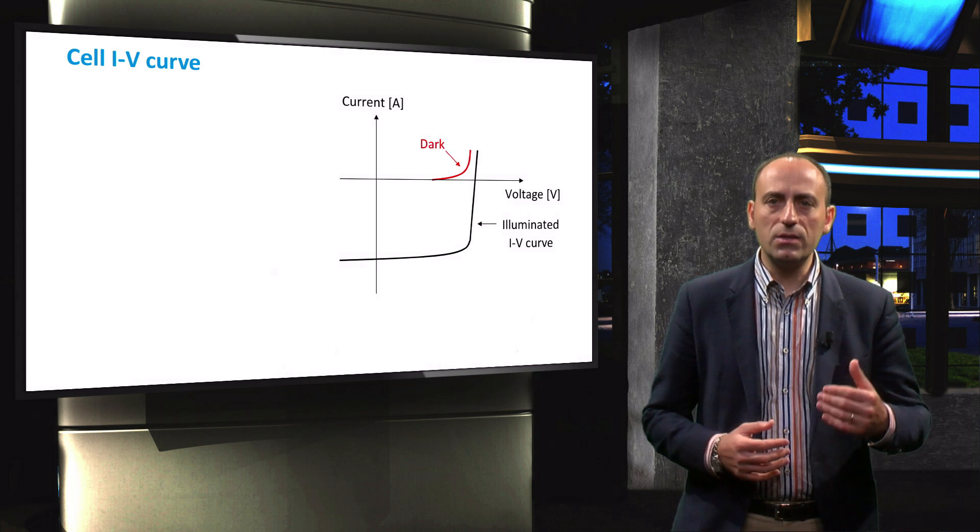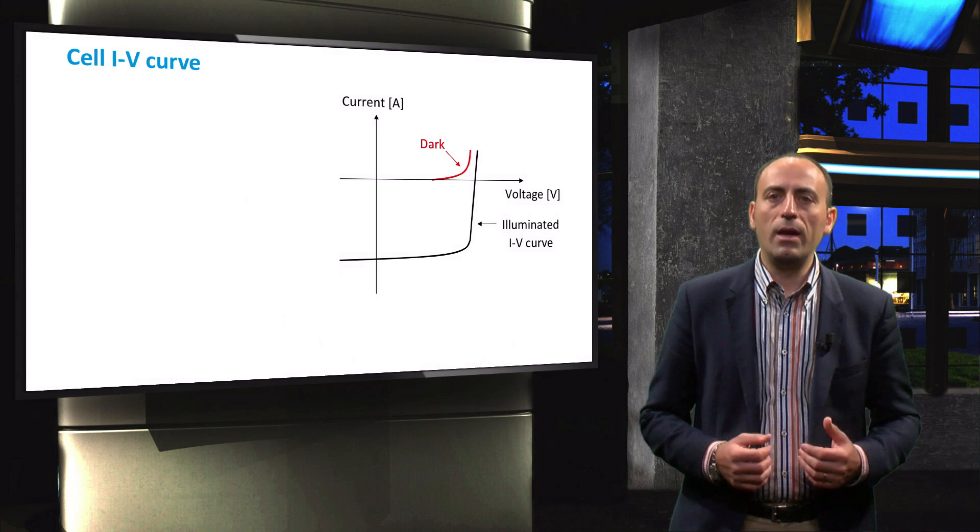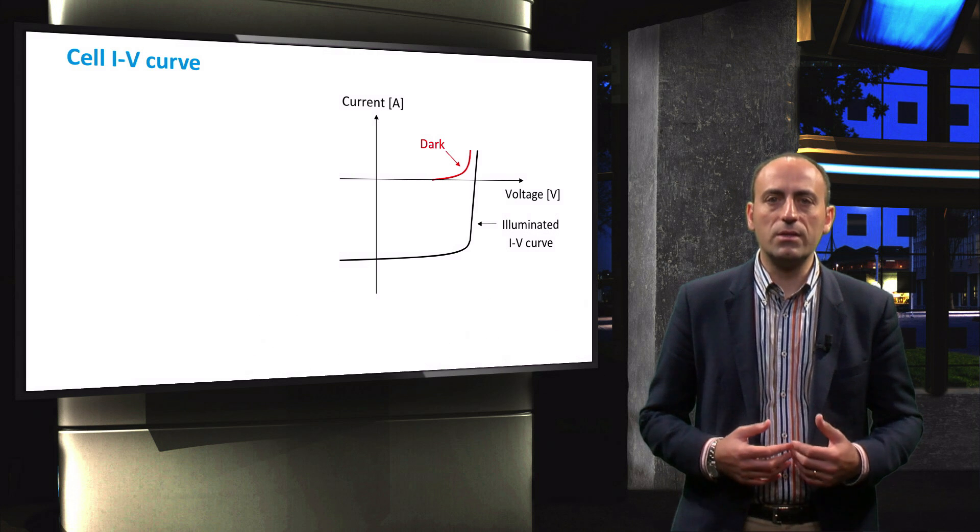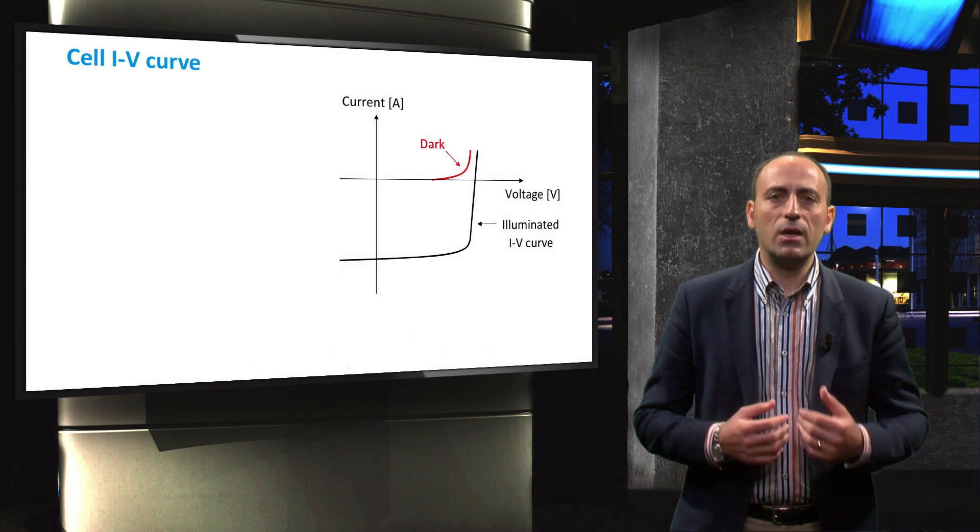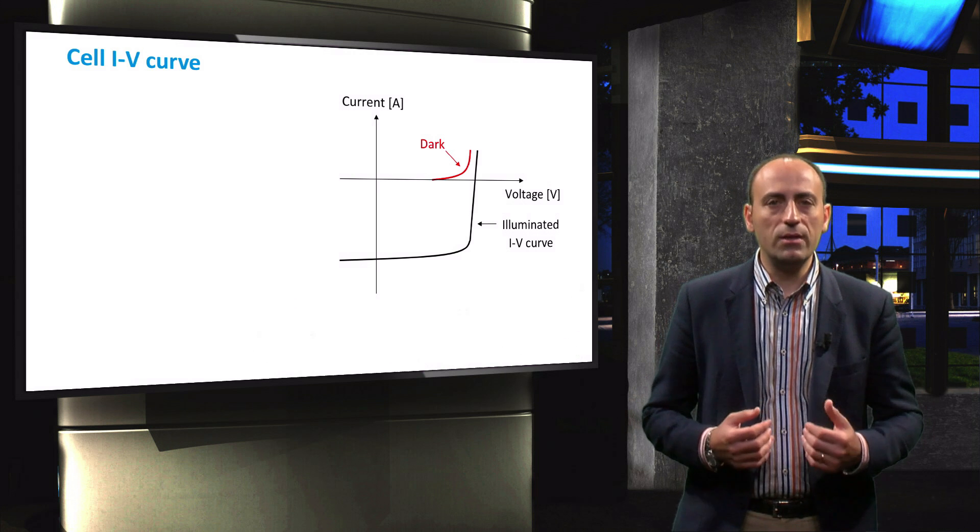Note that the vertical axis represents the current, while the horizontal axis represents the cell voltage.